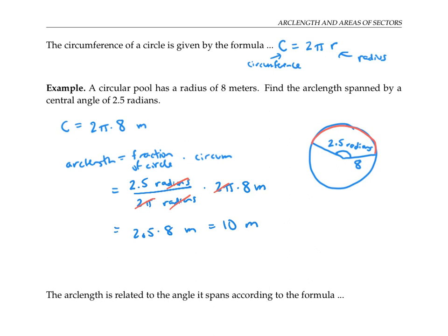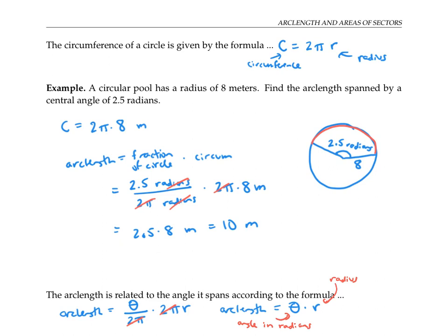In general, the arc length is related to the angle it spans by taking the angle over the total angle of the circle — two pi — times the circumference, which is two pi r. Since the two pi cancels, arc length is given by theta times r, where r is the radius of the circle and theta is the angle. It's important to note that theta needs to be measured in radians, not degrees, because we used two pi radians for the total measure of the circle.